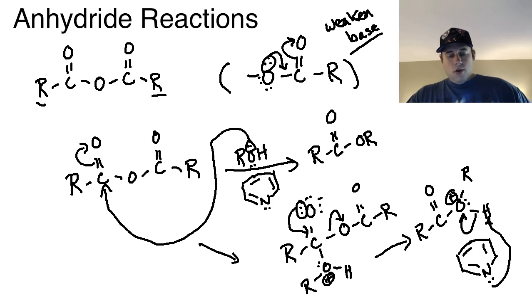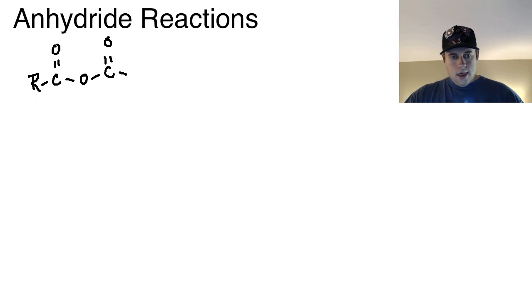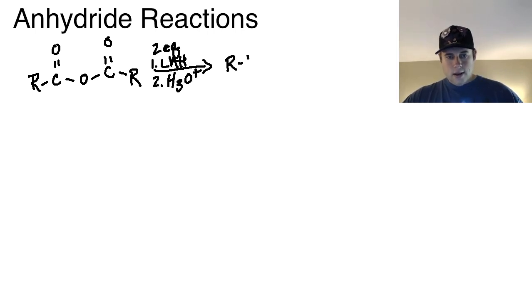Okay, so that is an example of how we can get an ester from an anhydride. So what are some of the other reactions? Well, if you recall the acid chloride ran through these in detail, but I'm going to list them here just so that we can keep track of all the other things that the anhydride can undergo. So an anhydride could undergo a reduction. Okay, so we could use two equivalents of LAH, and then we could follow that up with H3O+, and I would expect to find a primary alcohol at that point.